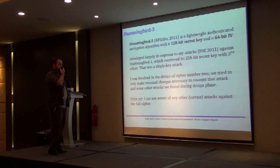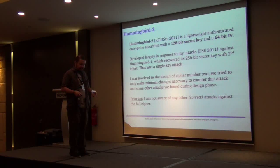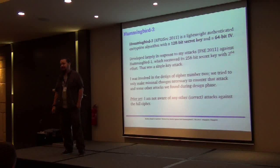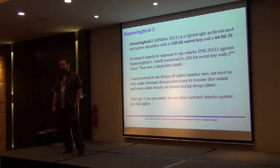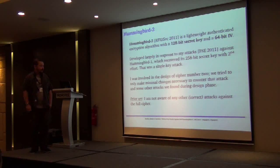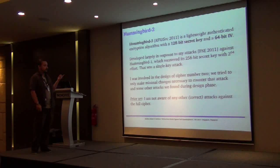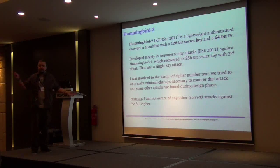I was involved actually in the design of this cipher, so we were only allowed to do minimal changes. This was partially because of intellectual property issues. Hummingbird 1 was patented, so the same patents had to apply to Hummingbird 2. Our hands were a little bit tight there. Because Hummingbird 1 was quite seriously broken—it had a 256-bit secret key which could be cut down to a 2^64 single key attack. So it was quite devastating.